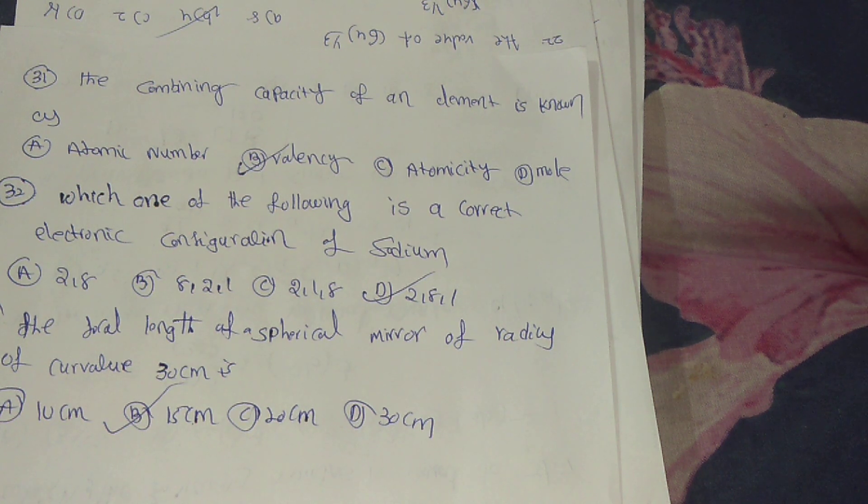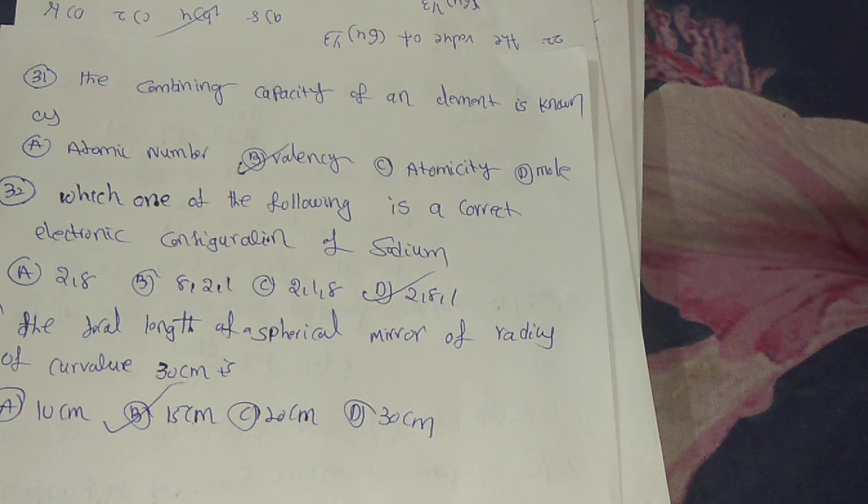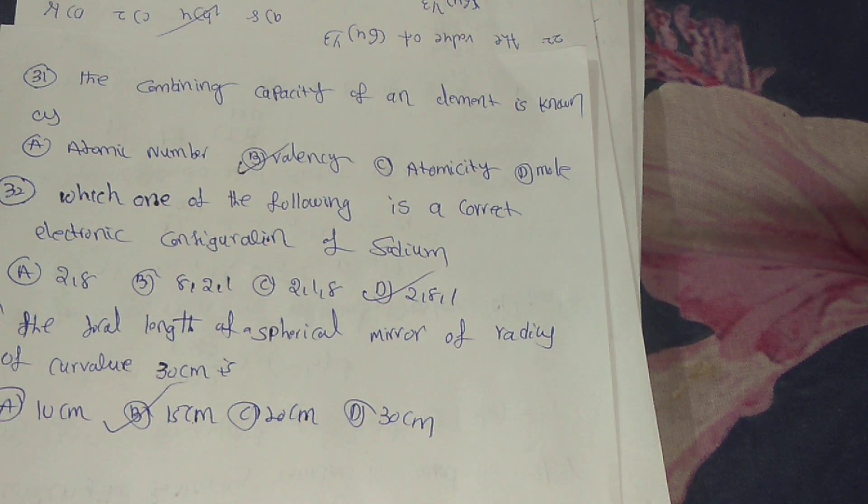32nd: which one of the following is the correct electronic configuration of sodium? Answer, option D, 2,8,1.